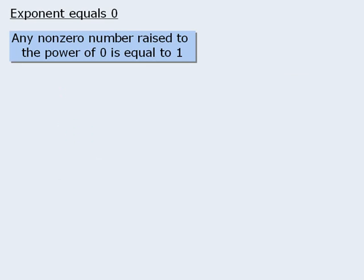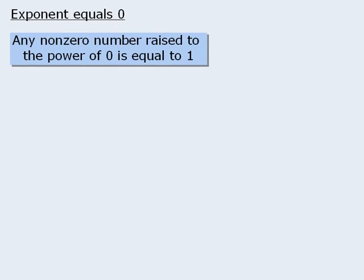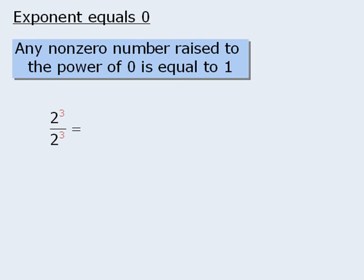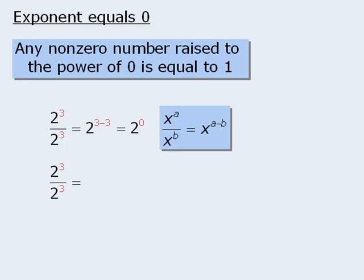Now in an earlier lesson, we learned that if we take any non-zero number and raise it to the power of 0, we get 1. We can now see why this is through the following example. Since the numerator and denominator both have the same base of 2, we can simplify this quotient by applying the quotient law. So the quotient will be 2 to the power of 3 minus 3, which is equal to 2 to the power of 0. Now to see why 2 to the power of 0 must equal 1, let's evaluate the same quotient in a different way. Since 2 to the power of 3 equals 8, we can rewrite our quotient as 8 over 8, which is equal to 1.